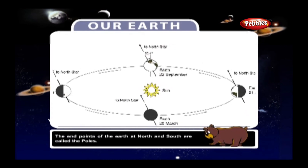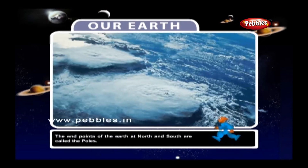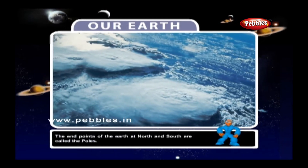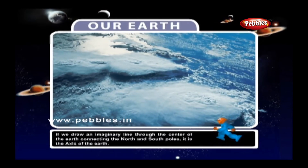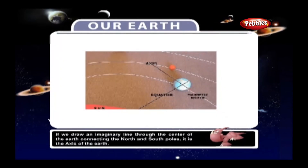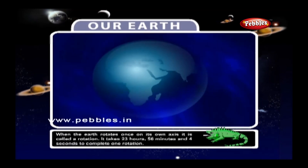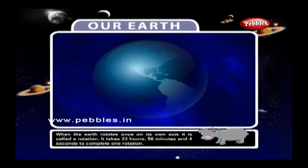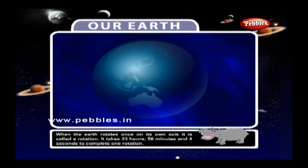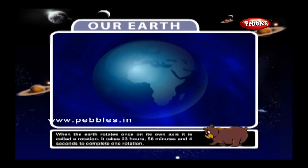The end points of the Earth at North and South are called the poles. If we draw an imaginary line through the center of the Earth connecting the North and South poles, it is the axis of the Earth. When the Earth rotates once on its own axis, it is called rotation. It takes 23 hours, 56 minutes and 4 seconds to complete one rotation.